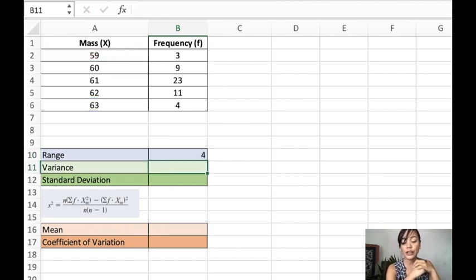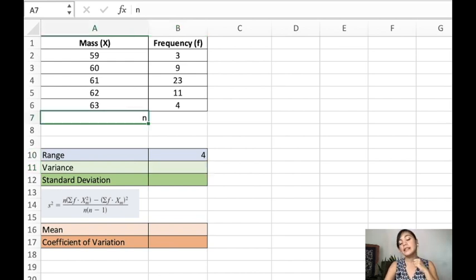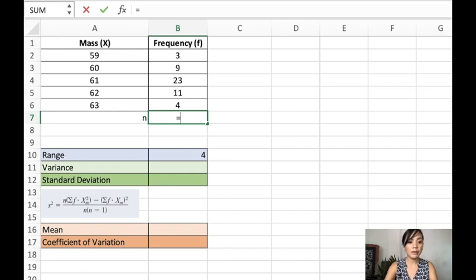The next one is the variance. To solve for the variance, we will use this formula. Let's solve it. For the sample data, we have small letter n, and that is the total number of frequencies. So we just sum everything we have here in frequencies.